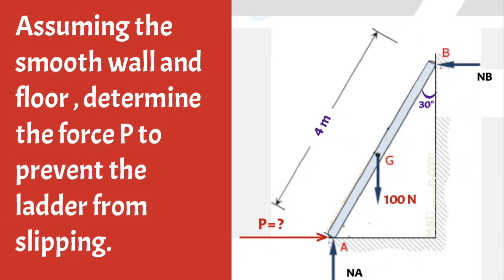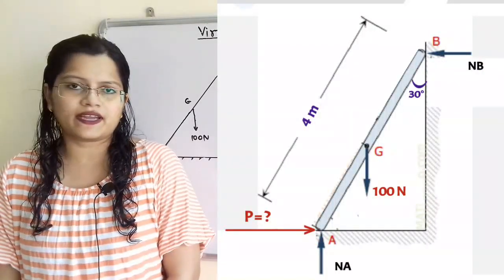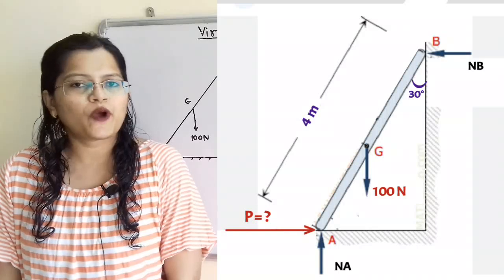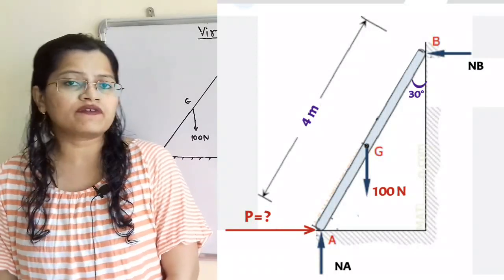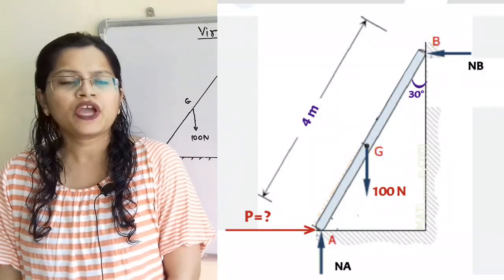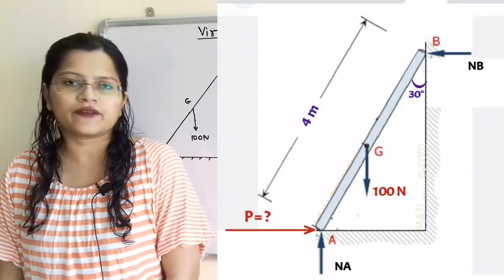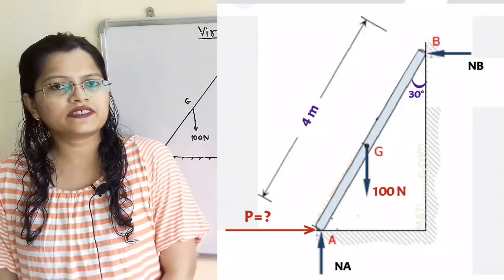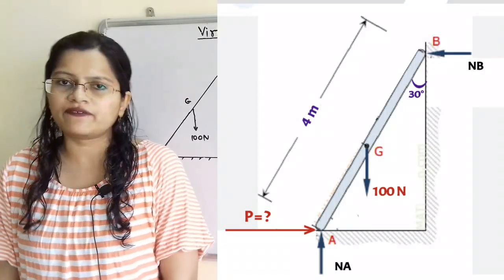Given question: assuming smooth wall and floor, determine the force P to prevent the ladder from slipping. The surfaces are smooth surfaces, which means there is no frictional force.